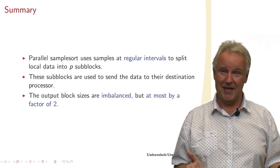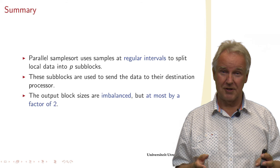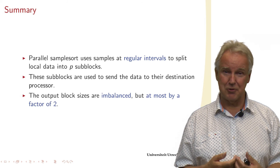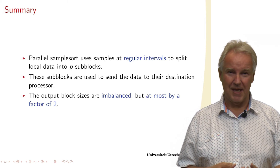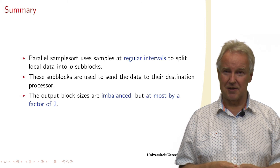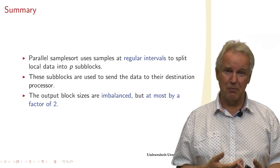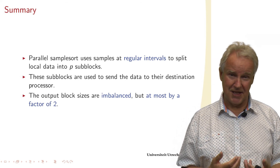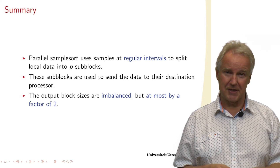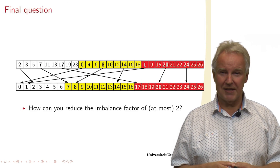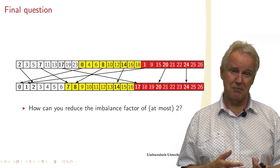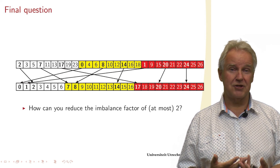To summarize: we can sort using a parallel sample sort. At regular intervals we take samples and use these to split the local data into p subblocks. These subblocks are sent to their destination processor. The output block sizes are imbalanced — not exactly the same — but they are within a factor of 2 of a perfect balance, so that's not too bad. A final question: can we reduce this imbalance factor of at most 2 by adjusting the algorithm?